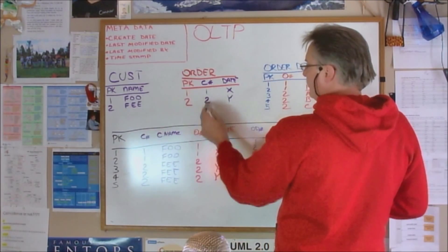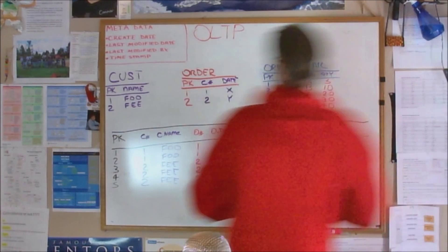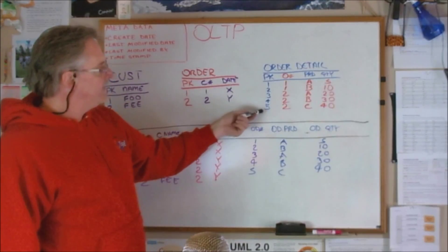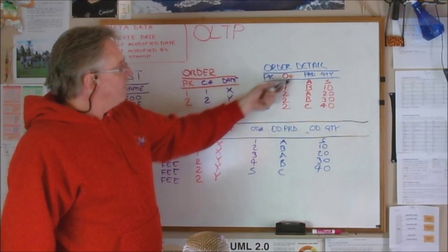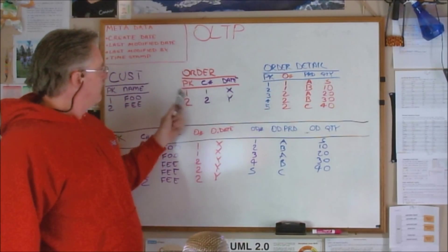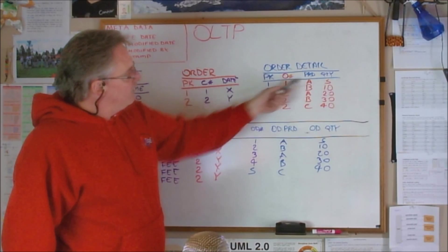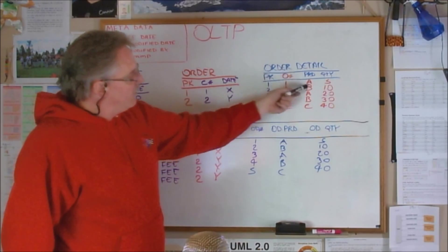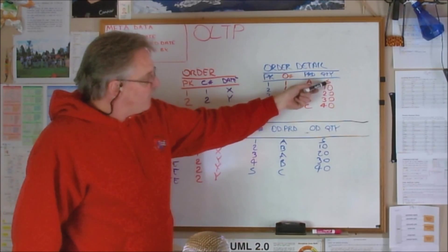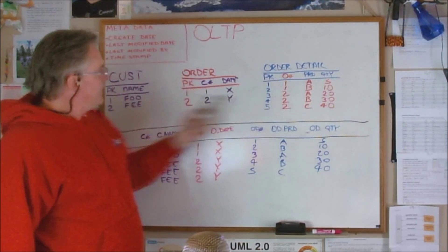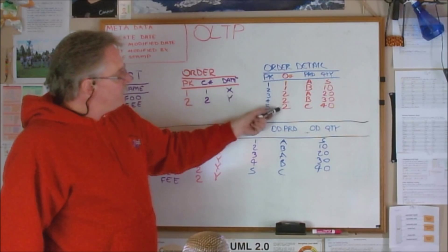Order detail: we have five things in the detail table. Order number one has two rows, one for product A with five quantity, product B with ten quantity. That's for order number one. Then for order number two we have three rows: product A of 20, product B of 30, product C of 40.